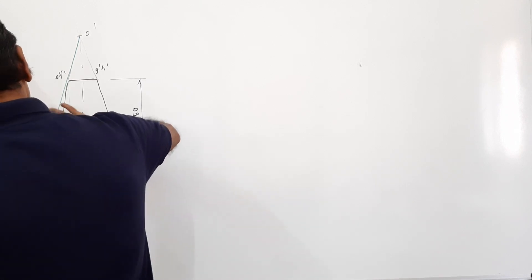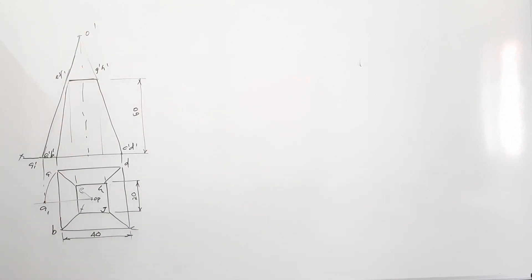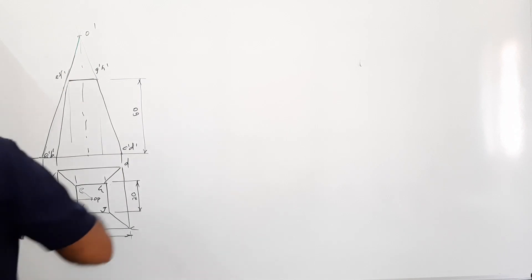It is the true length of slant edge of the pyramid. If the full pyramid is existing, this is its true length of slant edge. This is TL.